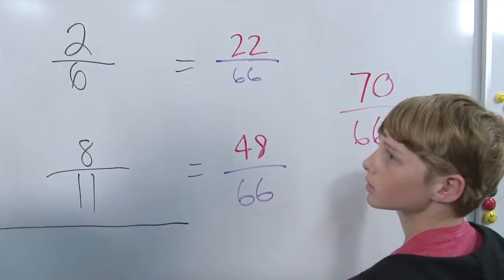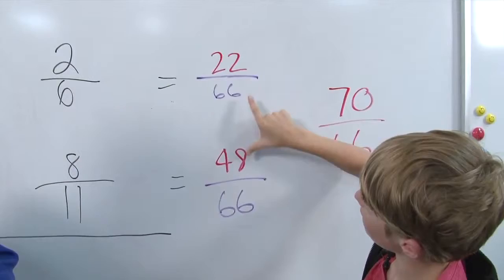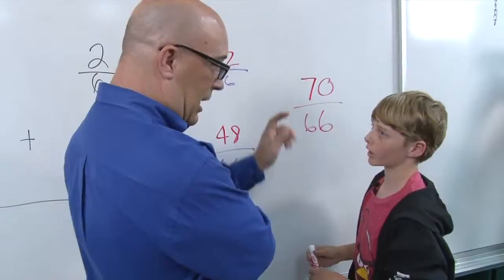And how did you get seventy? Because there's some students watching because you did this in your head. Yeah. Which is fine, but they may be like, where did the seventy come from? I added the eight and the two and I got ten. And then I added the forty and the twenty and I was sixty and sixty plus ten is seventy. Perfect. So we have seventy over sixty-six and that's an improper fraction.